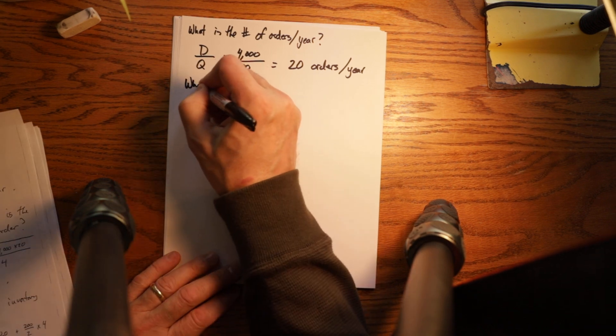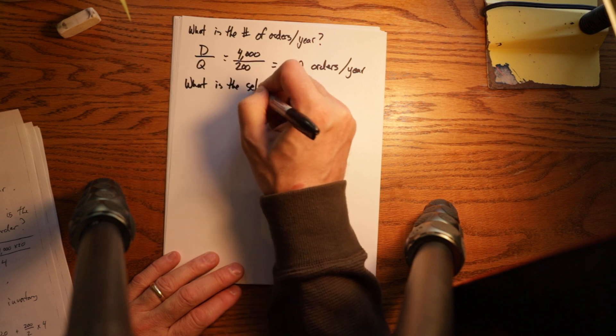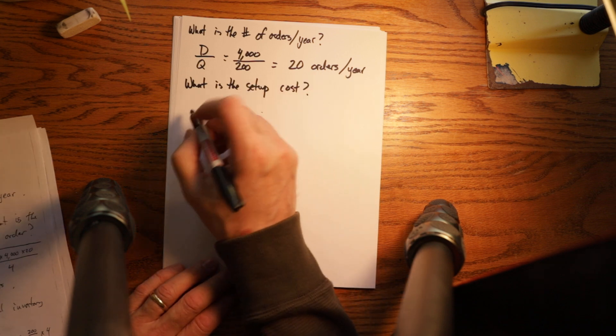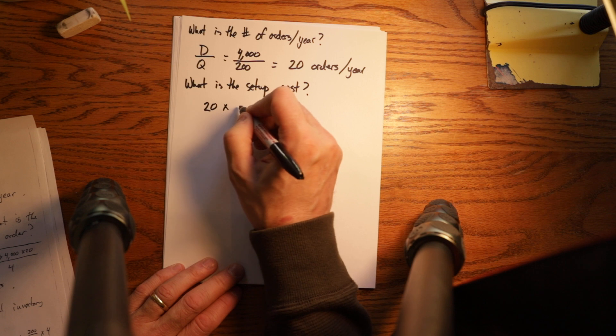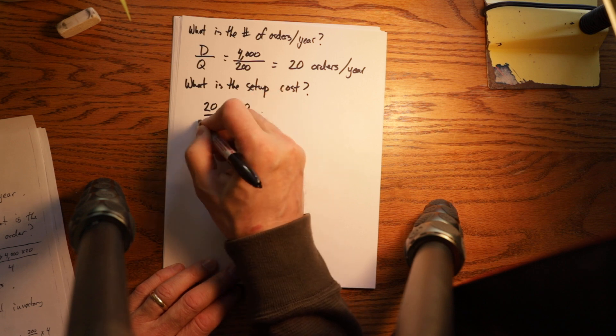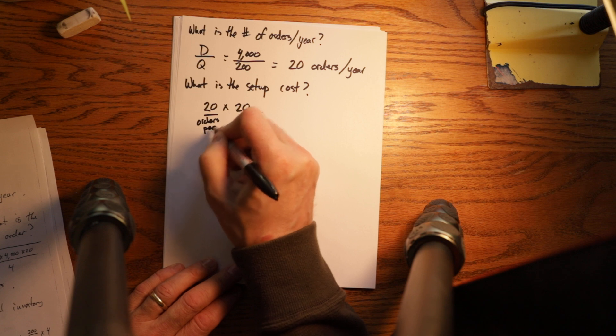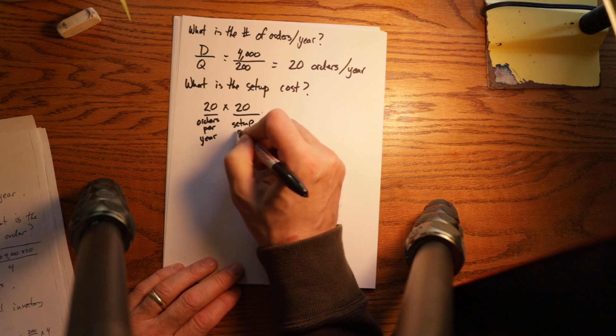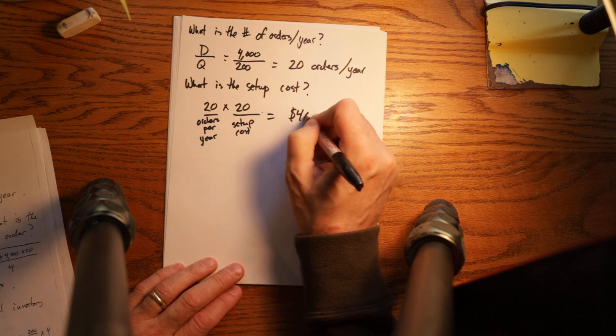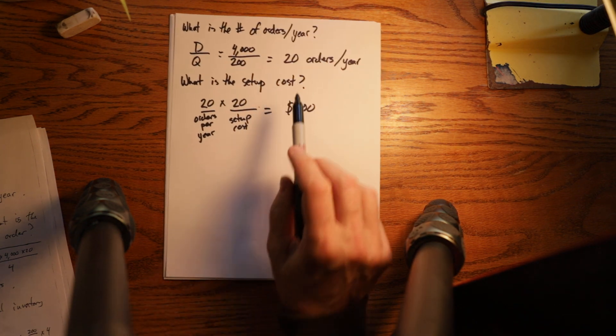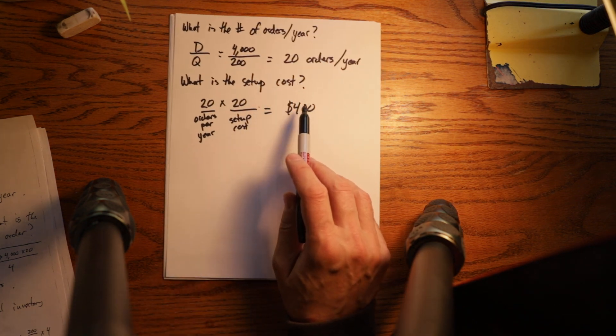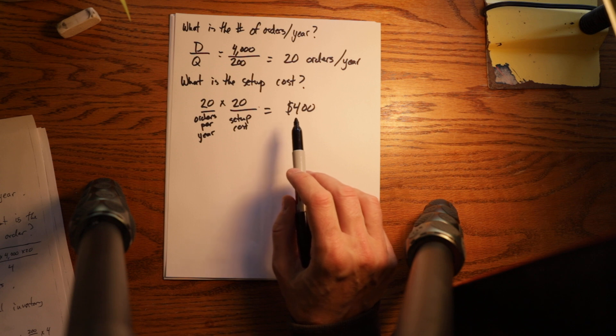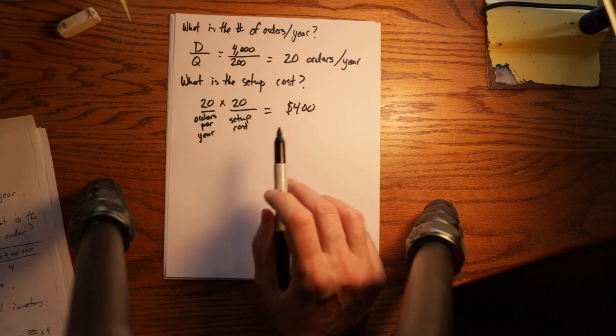And then we could ask what is the setup cost? And that is 20 times 20 orders per year. Setup cost is equal to $400. Given you calculated the EOQ, you would know that was $400 because the holding cost was $400. So you could either just write down $400 or you could calculate it and check that you did both of them the same.